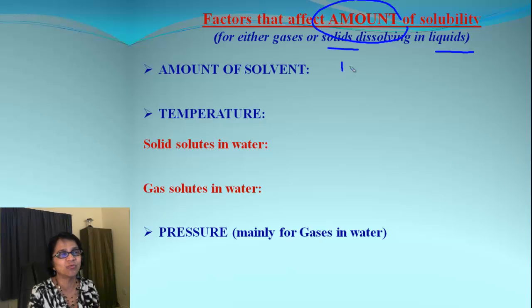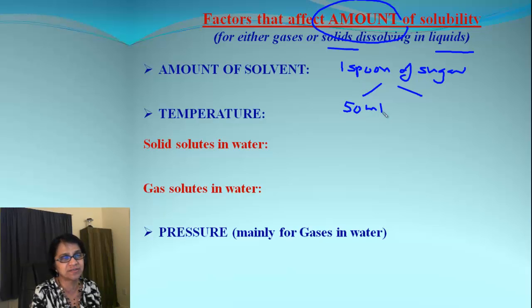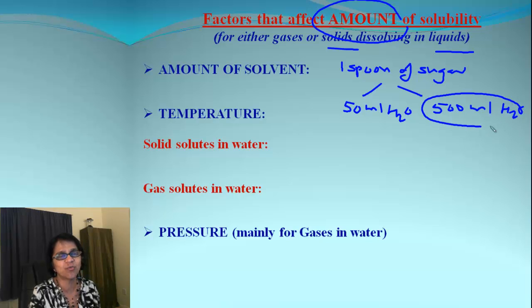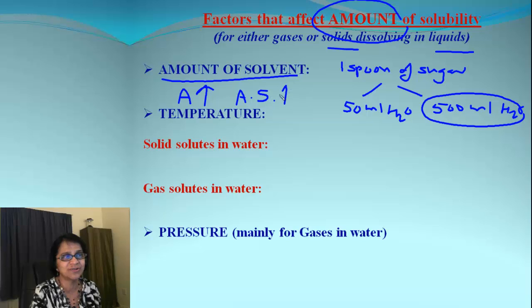Let's say we have one spoon of sugar and we are trying to dissolve that in two different flasks. One is 50 ml, the other is 500 ml of water. Which one will dissolve more? Of course, the bigger one. So if amount of solvent goes up, the amount of solute also goes up. We can dissolve more and more sugar. Maybe 50 ml can only take one spoon, but 500 ml may take 10 spoons.